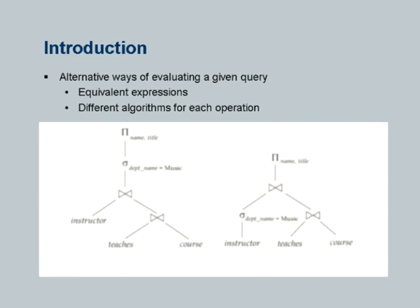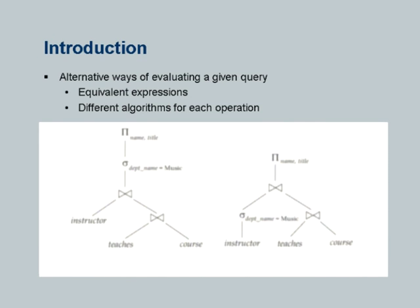Then we go to the physical level, which is instead of just saying 'this is a join,' we say this is a merge join or a hash join. Instead of saying selection, we say selection using an index. Such plans annotated with evaluation algorithms are referred to as the physical relational algebra or the physical plan. Here is a small example: a join of teachers and course, then join with instructor, then there is a selection on department equal to music.